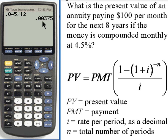So now we've got the i, the rate per period. We want 1 plus i, so I'll take that answer and add a 1 to it.